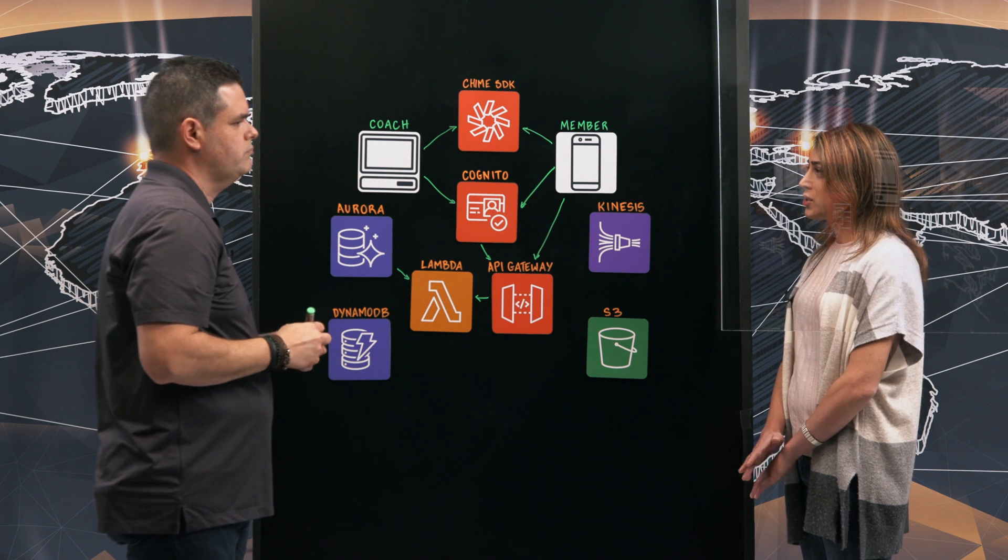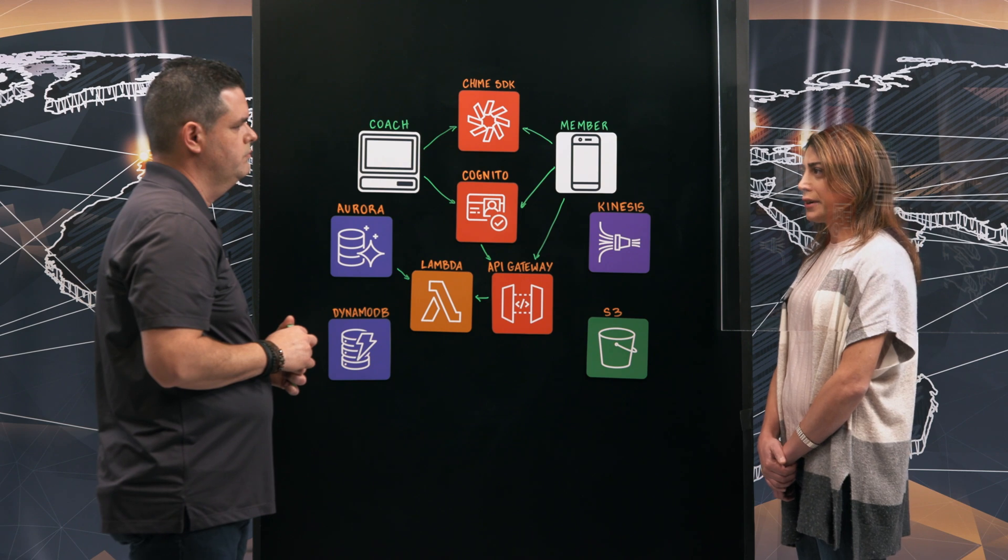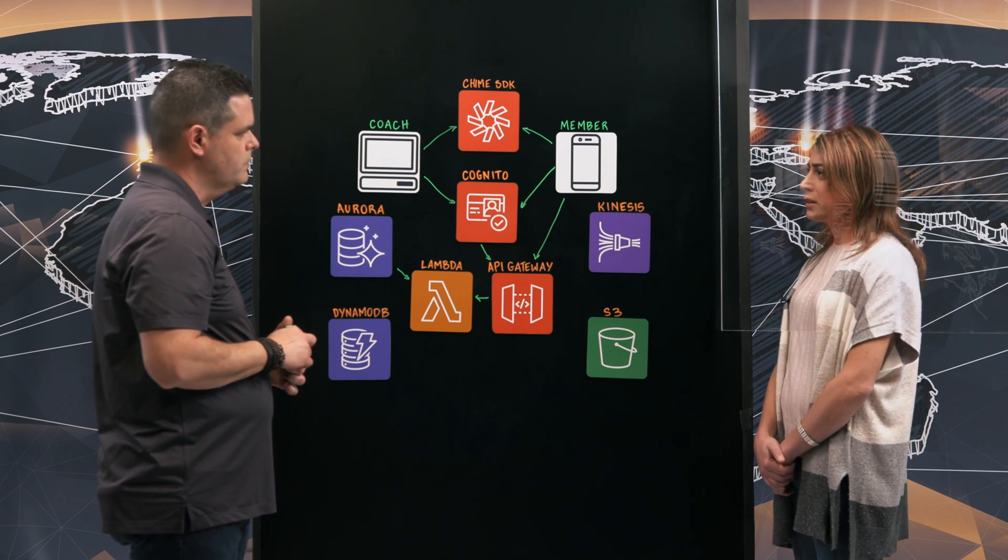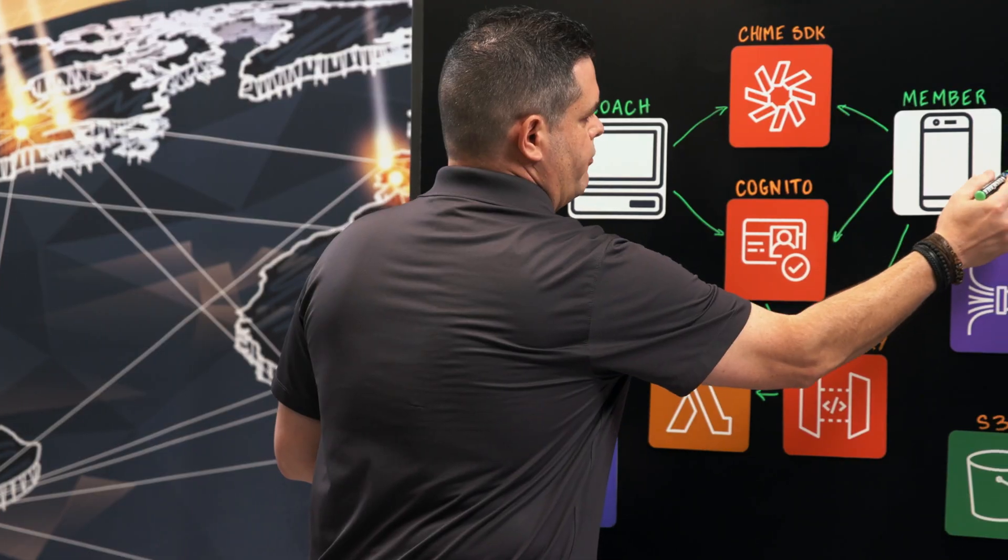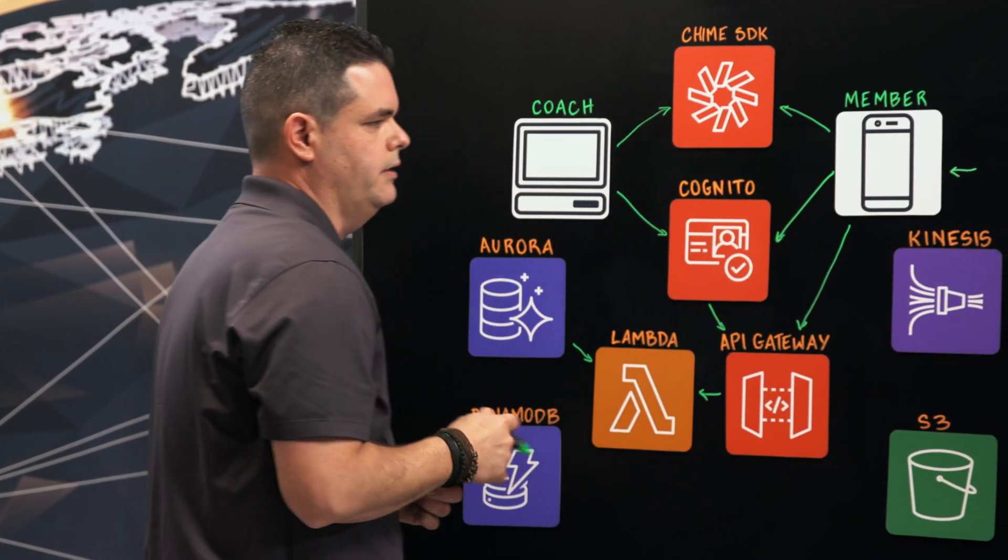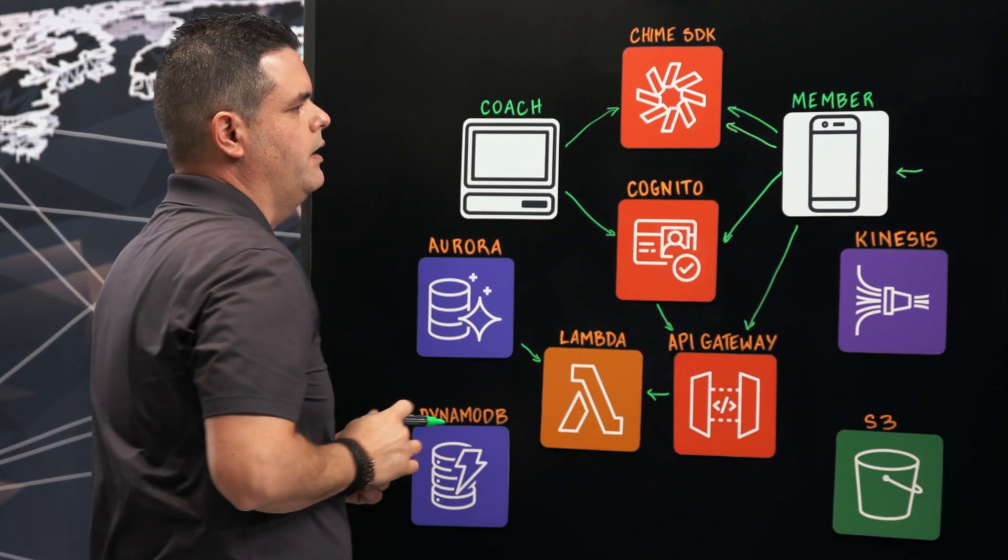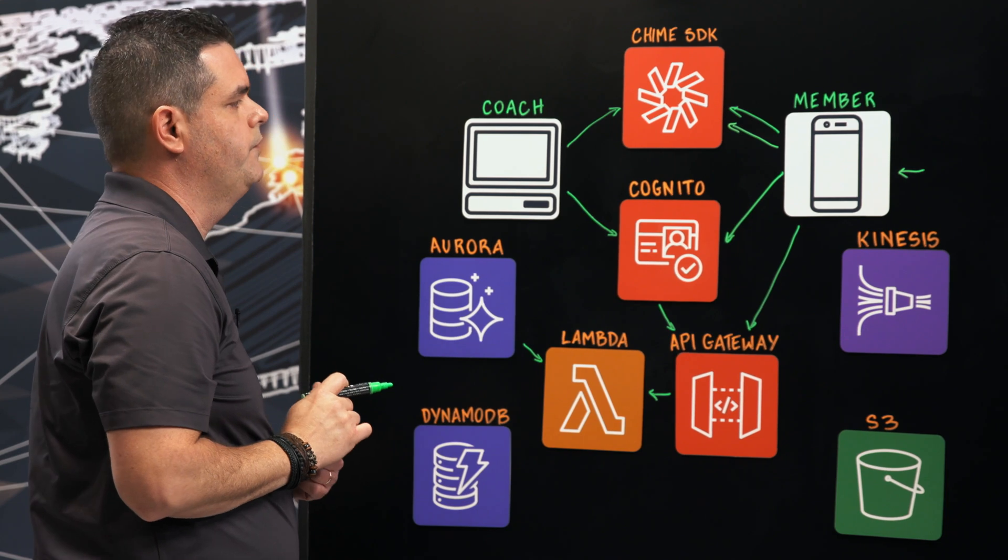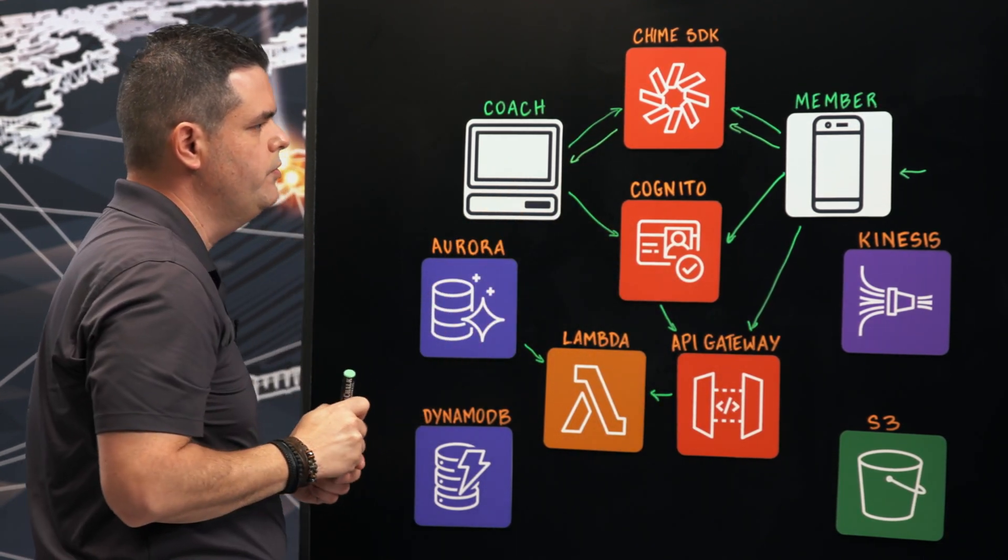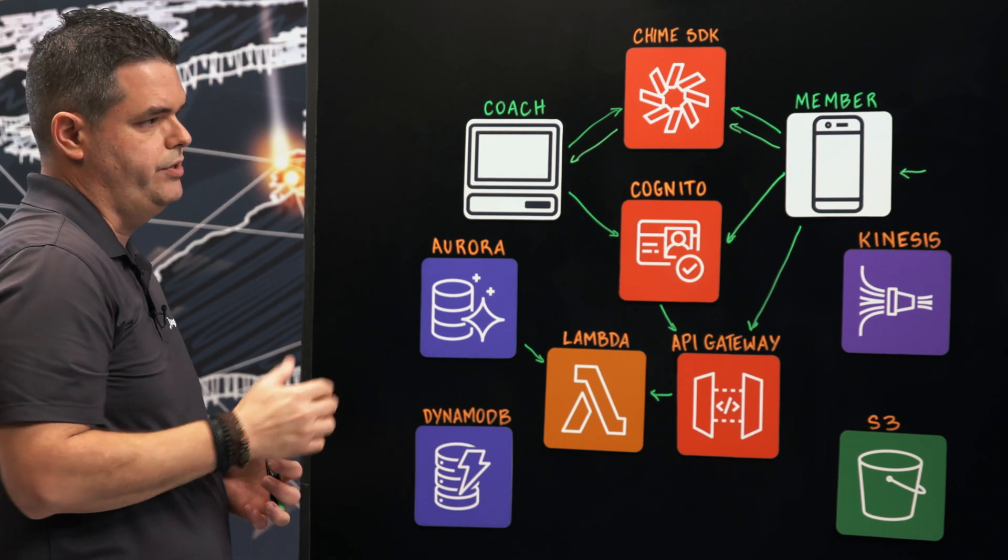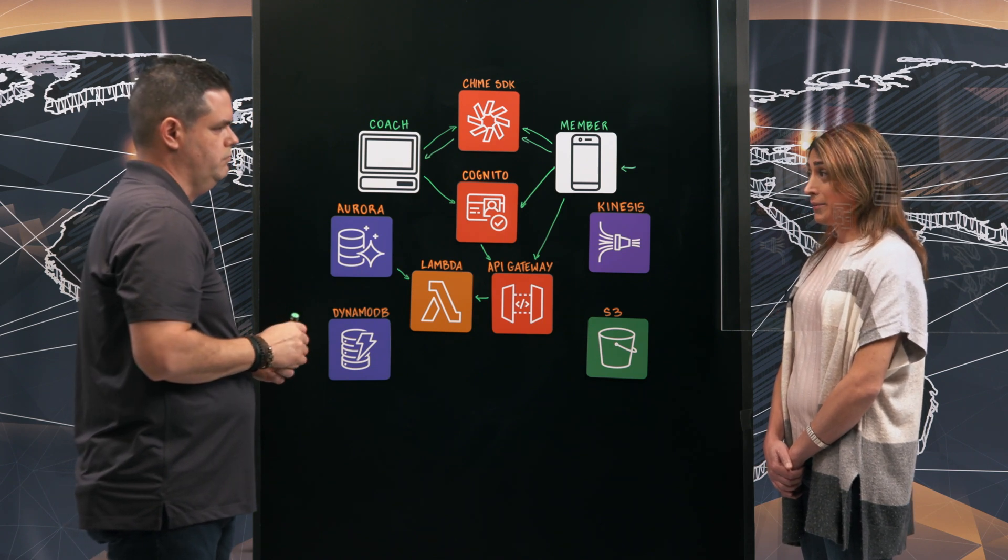So you're using the Chime SDK to establish video connection. What else are you gathering in that interaction? During the class, our members wear our heart rate monitors. And from those heart rate monitors, we collect heart rate data every second. That data is sent using the WebSocket functionality that Chime SDK provides to the coach. And so the coach has a view of heart rate information about every single one of our members during the class. And so this is real time.